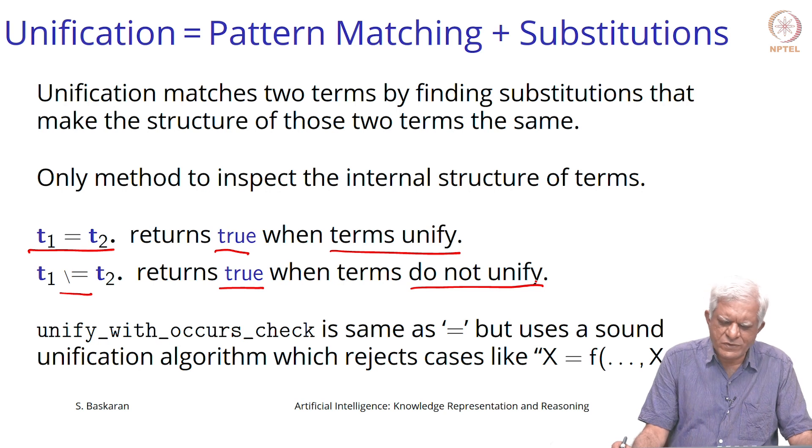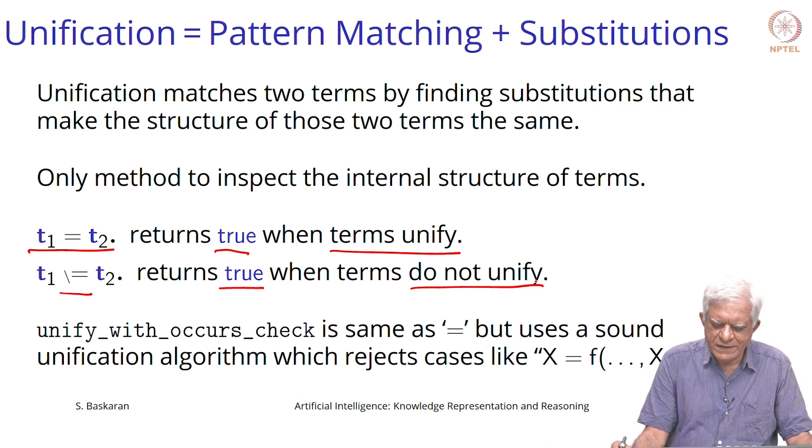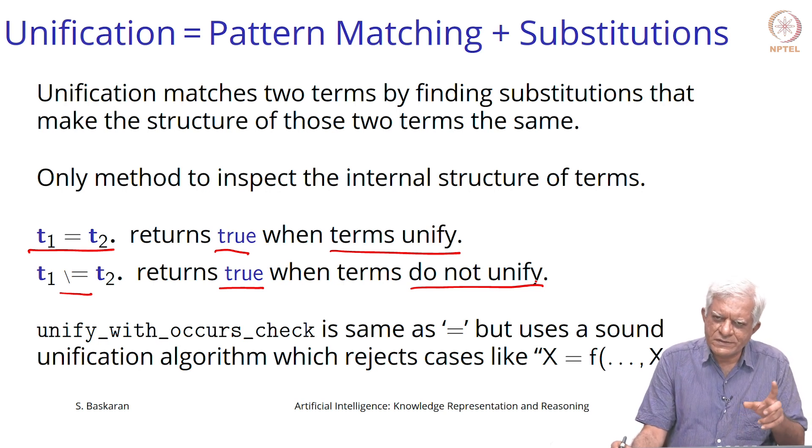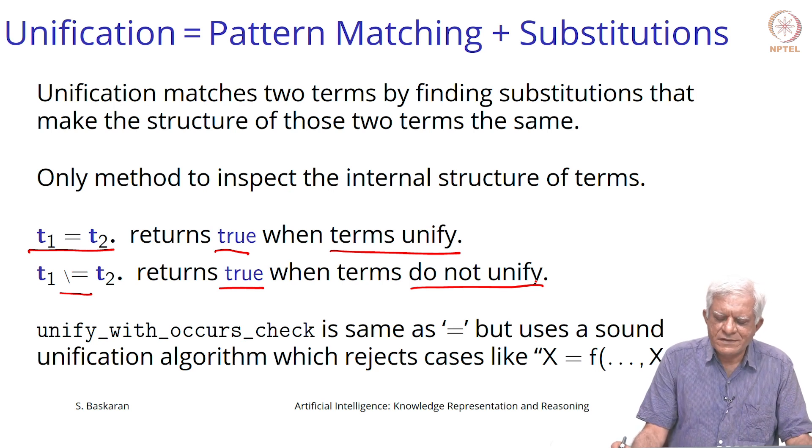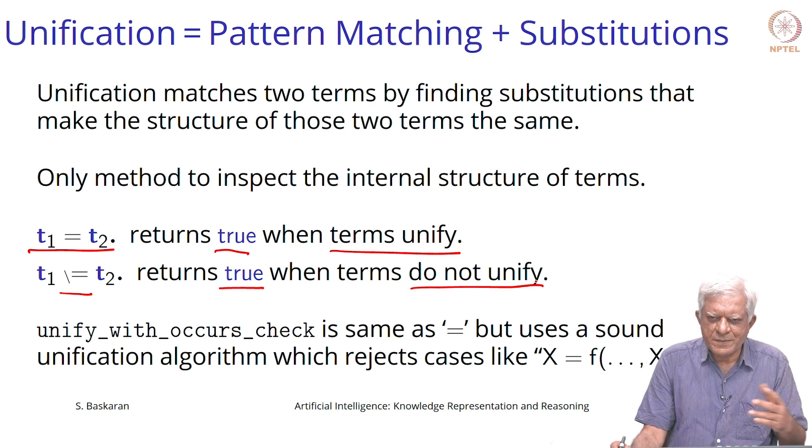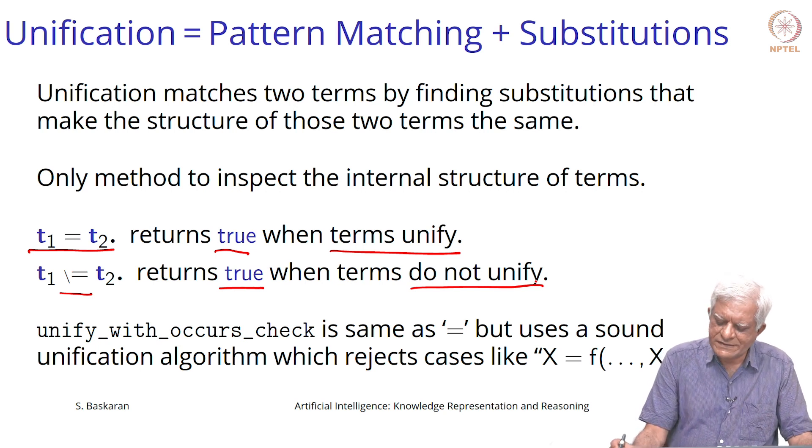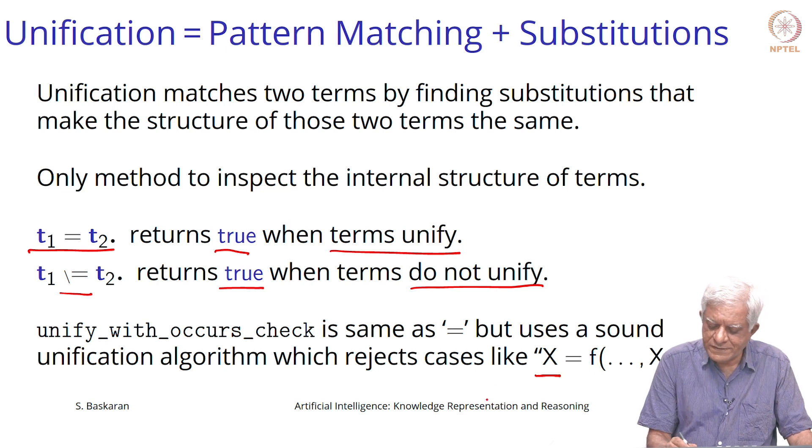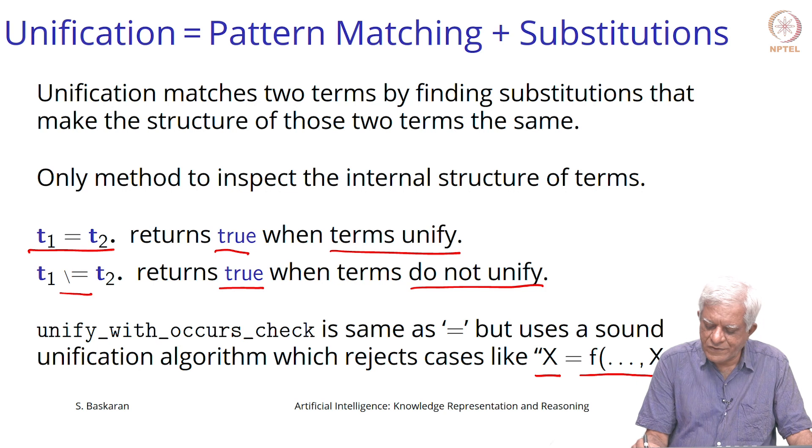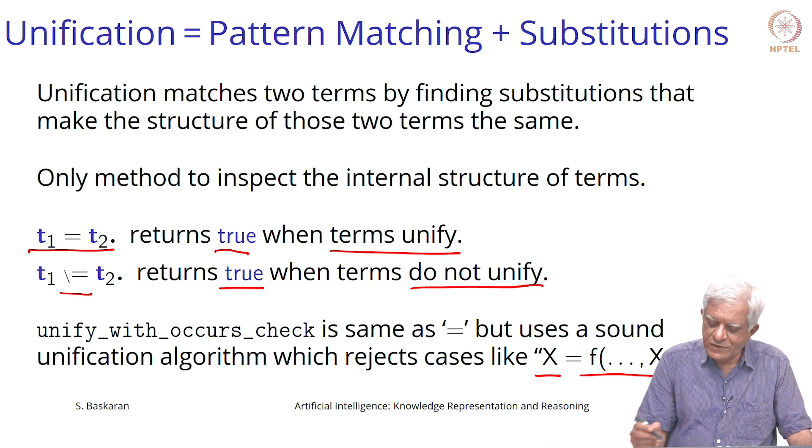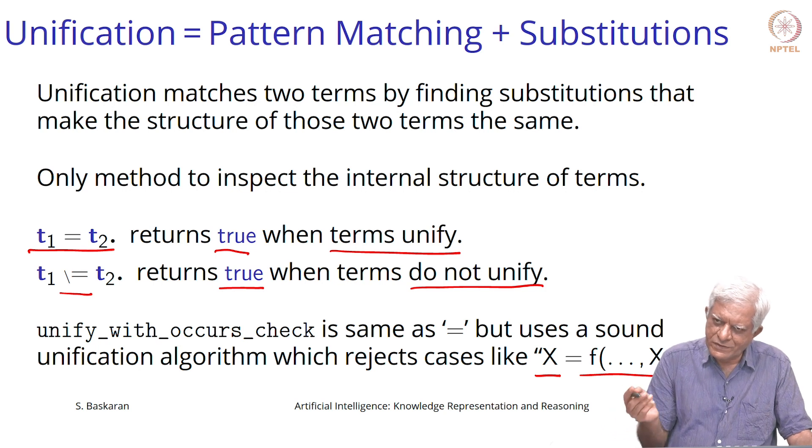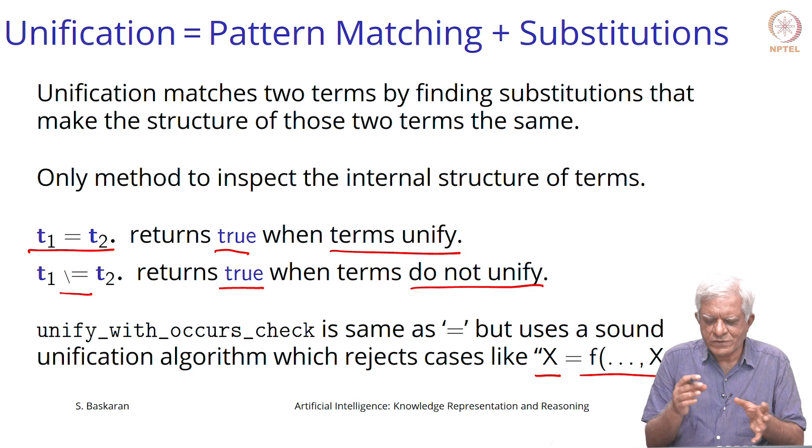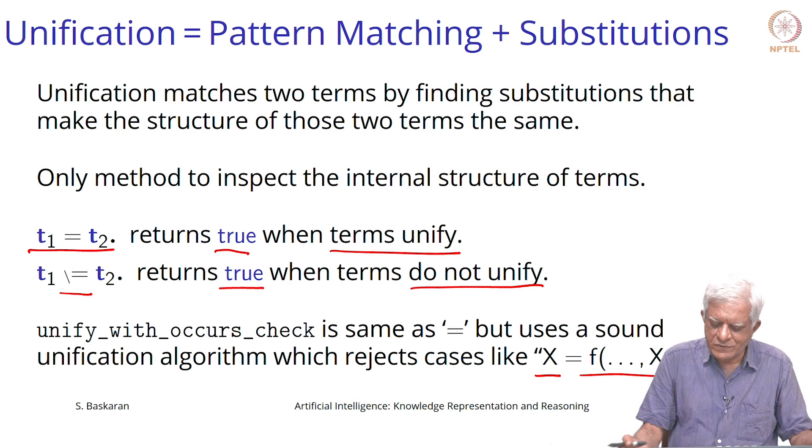Prolog uses a simpler notion of unification. It does not do the occurs check because of efficiency reasons. The occurs check says that you cannot substitute for x a value f of something which contains an x. If x occurs in the pattern that you are trying to unify it with or substitute it with, then you cannot do that.